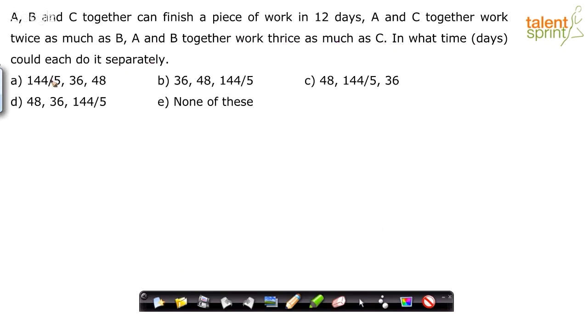So basically we have to find out the number of days required by each one of them, A, B and C separately. Now look at the first statement of the question. A, B and C together can finish a piece of work in 12 days. Means what? 1/A + 1/B + 1/C = 1/12. This is the capacity equation.